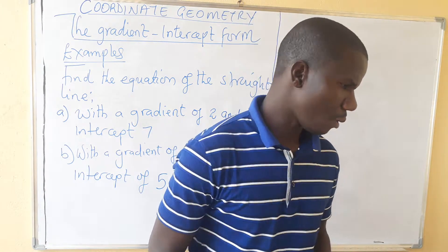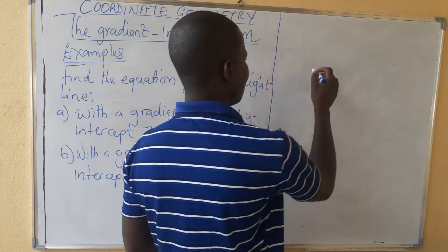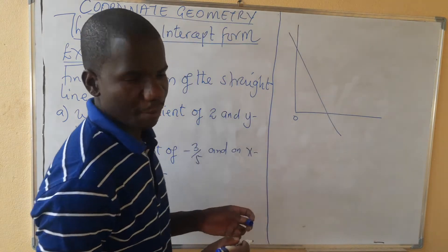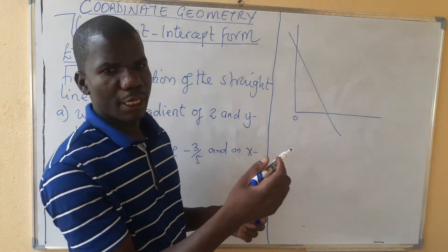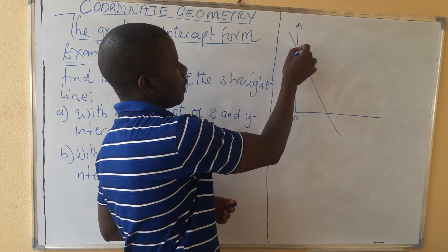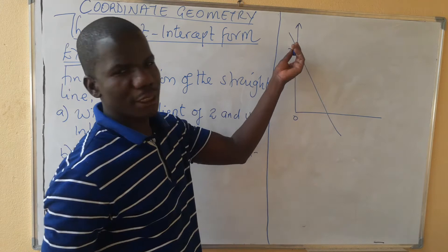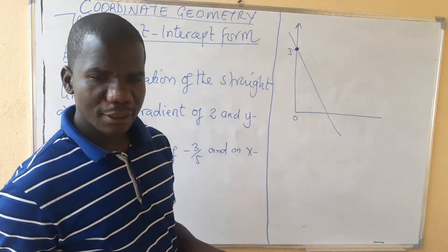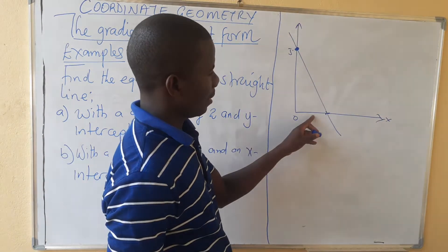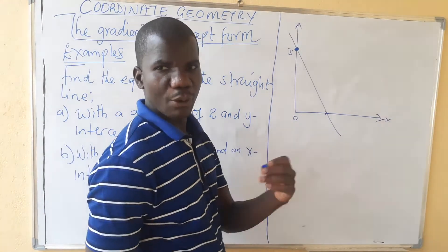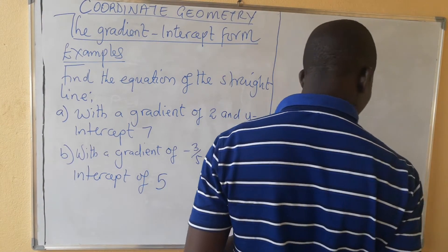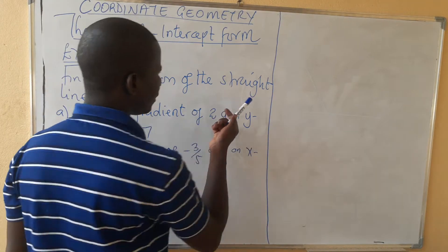We are looking at the y-intercept and the x-intercept. The y-intercept is the point at which the line cuts the y-axis. At that point, the x-coordinate is 0. The x-intercept is the point at which the line cuts the x-axis, and at that point the y-coordinate is 0.